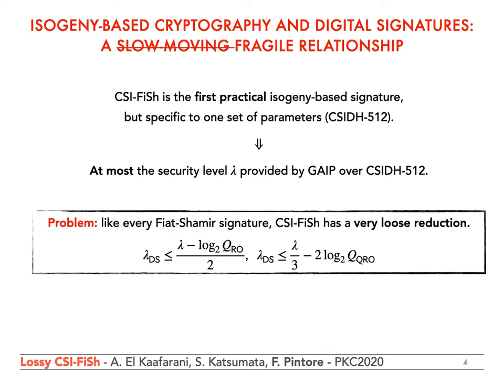However, SeaFish is based on the Fiat-Shamir paradigm, and like every Fiat-Shamir signature, SeaFish has a very loose reduction both in the random oracle model and in the quantum one. To be more precise, if lambda represents the bits of security of the hard mathematical problem, then the digital signature cannot offer more bits of security than (lambda minus log_2 of the number of queries to the random oracle) divided by 2. Therefore, a hard problem offering 128 bits of classical security, assuming a modest 2^40 queries, cannot offer more than 44 bits of security to the digital signature. In the quantum random oracle model, the situation is even worse.